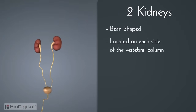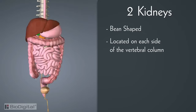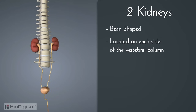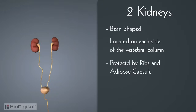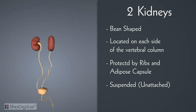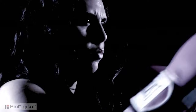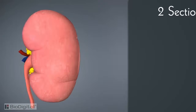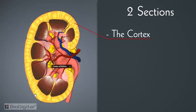The two kidneys are bean-shaped in appearance. They are located on either side of the vertebral column, behind the upper part of the abdominal cavity. The kidneys are protected by the ribs and a heavy cushion of fat called the adipose capsule. They are literally suspended in the body, meaning unattached to any other major organ — they pretty much stay up by themselves.